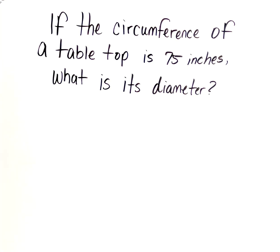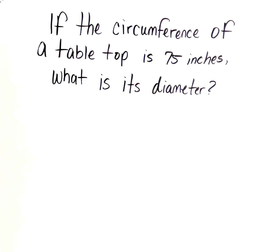Let's take a look at example number six, solving for missing dimensions. The question says if the circumference of a tabletop is 75 inches, what is its diameter? So what is our trigger? Anytime we're dealing with geometry questions, we're always given some type of dimension.